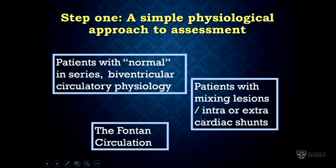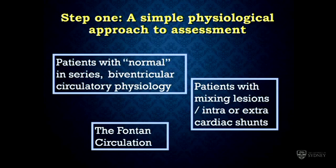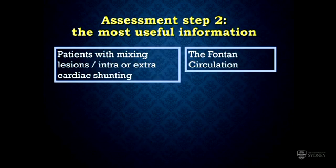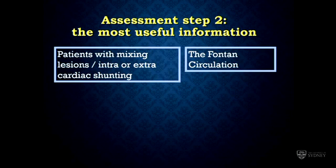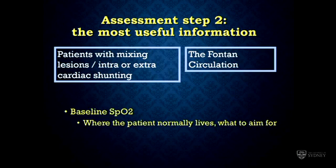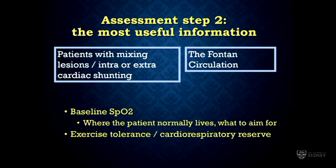The other two groups are the ones we're going to be talking about today: patients with abnormal circulatory physiology. The first is the Fontan circulation, and also patients with mixing lesions and cardiac shunts. If I had to pick two pieces of information most useful in their assessment, the first would be knowing their baseline saturation — because that tells me where that patient normally lives and what I'm going to be aiming for during the procedure. The other crucial piece of information is the patient's exercise tolerance, because that gives me a good overall view of their cardiorespiratory reserve.